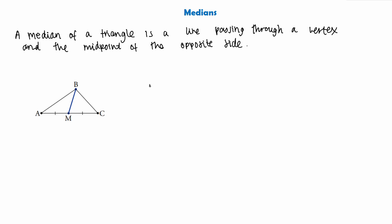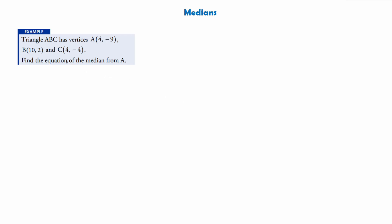In this case we say that line BM is a median of triangle ABC. However, this triangle has more than just one median — we'll have a median that goes from A to the midpoint of the opposite side, and another median that goes from C to the midpoint of the opposite side. So every triangle will have three medians. The best way to show how to work out the equation of a median is by doing an example.